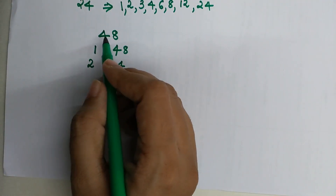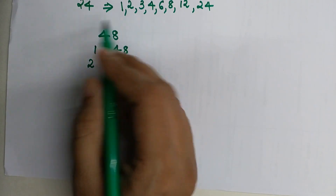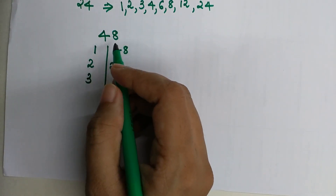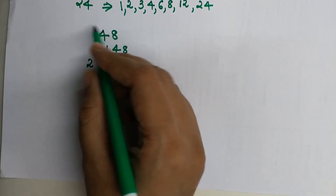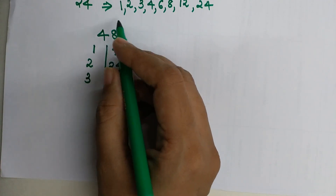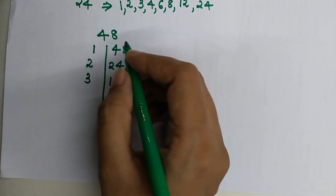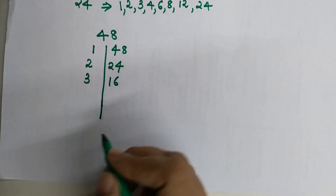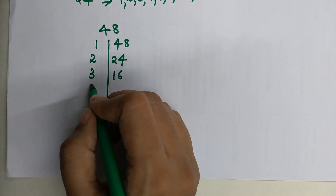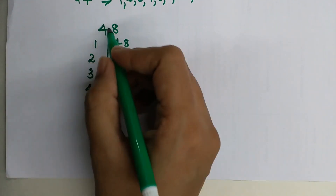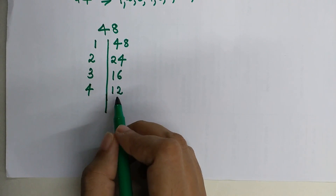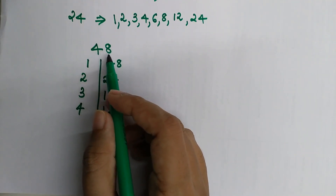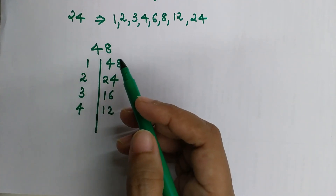Now check 3: 4 plus 8 is 12, and 12 is divisible by 3, so 3 is a factor. Dividing 48 by 3 gives 16, so we write 3 and 16. For 4: 4 twelves are 48, so 4 is a factor and we write 4 and 12. For 5: 48 is not divisible by 5 because the last digit is neither 0 nor 5.